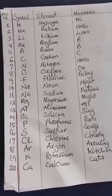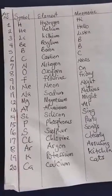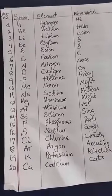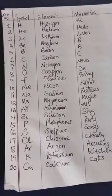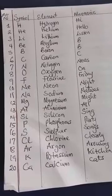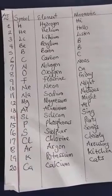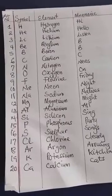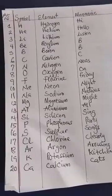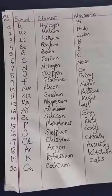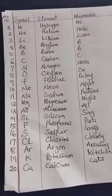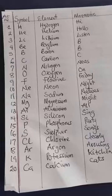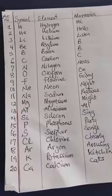Let's take that again: Hi, Hello, Listen, BBC News on Friday night. Natives might all sing party songs, clearly, arosine, kitchen cats. Now, if you can remember that, it's very easy to remember the first 20 elements: Hi, Hello, Listen, BBC News on Friday night. Natives might all sing party songs, clearly, arosine, kitchen cats.